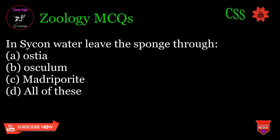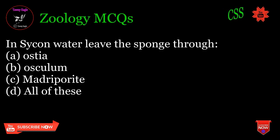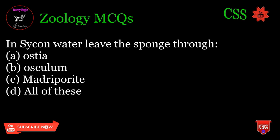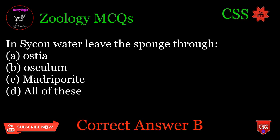In Sycon, water leaves the sponge through: A. Ostia, B. Osculum, C. Madriporite, D. All of these. Correct answer: B.